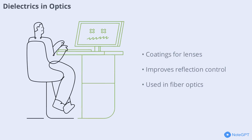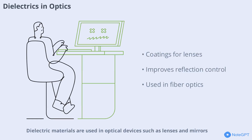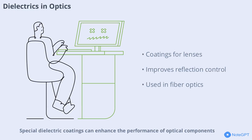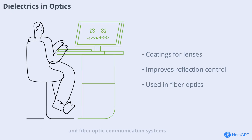Dielectric materials are used in optical devices such as lenses and mirrors to control light transmission and reflection. Special dielectric coatings can enhance the performance of optical components, making them more efficient and durable. This is crucial in cameras, microscopes, and fiber-optic communication systems.